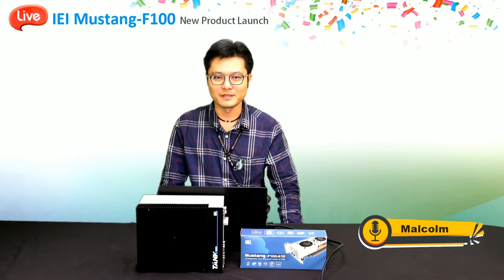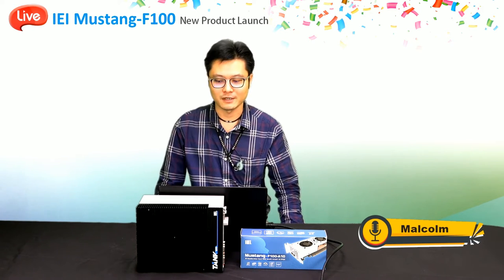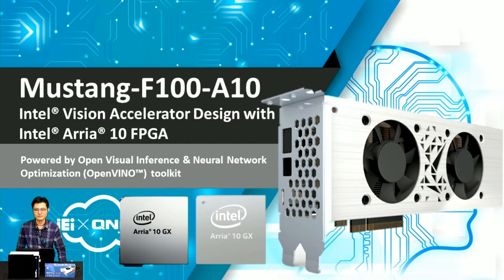Hello everyone, my name is Malcolm. Today I am going to introduce the IEI Mustang F100-A10 Acceleration Card. The Mustang F100-A10 is an Intel Vision Accelerator design with Intel Arria 10 FPGA. It is powered by OpenVINO, the Open Visual Inference and Neural Network Optimization Toolkit.